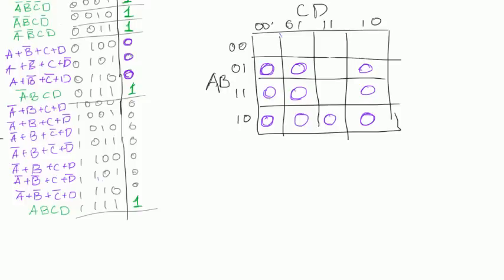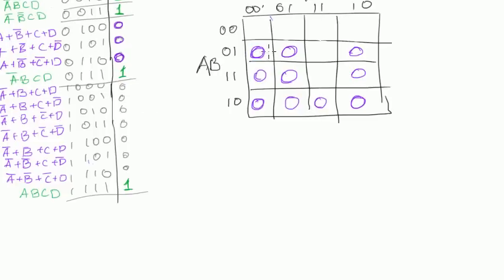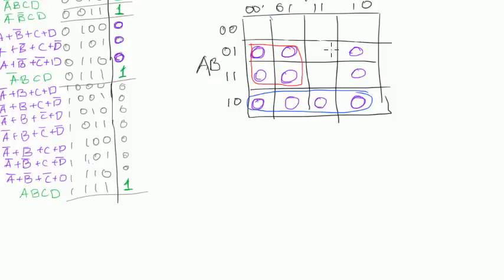So how would you group this? First of all, these four are pretty obvious — we should group them. Then another one: these four are also obvious, we want them grouped. And then the last one — we should group this group of four. As you remember, we can do that easily.